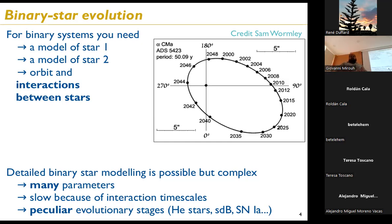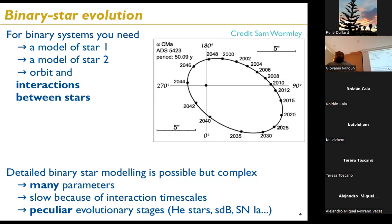Detailed modeling of binary stars requires all those parameters and is quite slow, because interactions between stars tend to be very rapid, requiring many small time steps. This gives you exotic objects such as subdwarf B stars and Type Ia supernovae, which also need to be modeled.